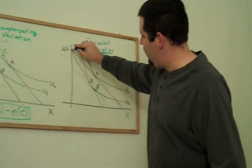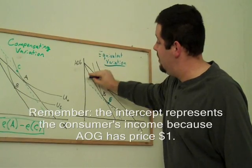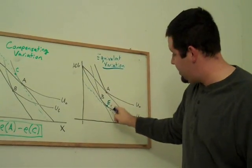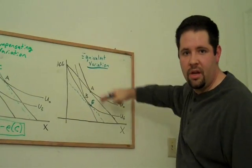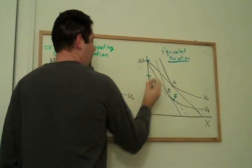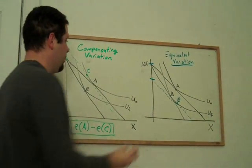In other words, he's willing to move his intercept on all of the goods down to this point, where it's going to be just tangent to his new indifference curve. And so that is going to be where we find equivalent variation from the graph.